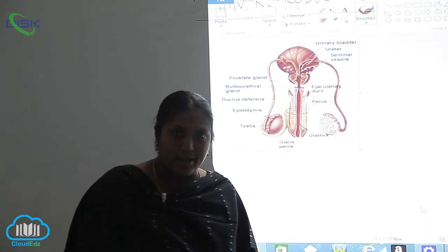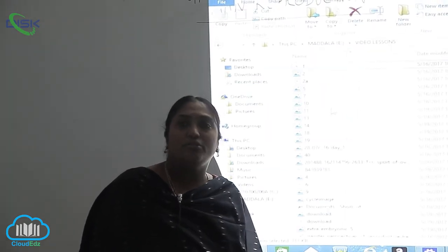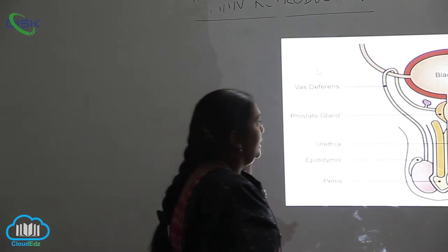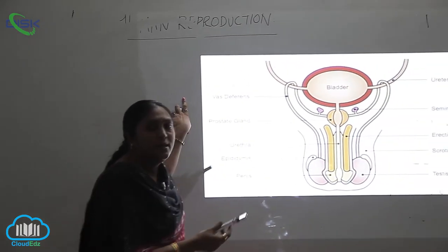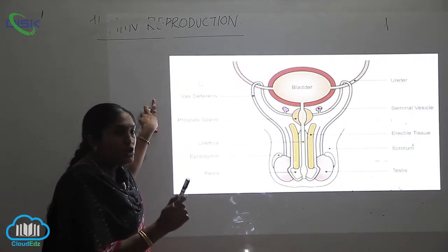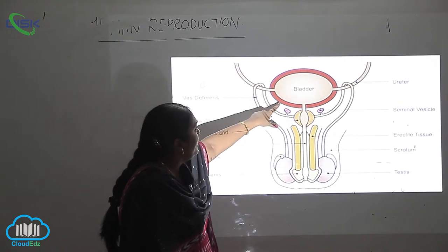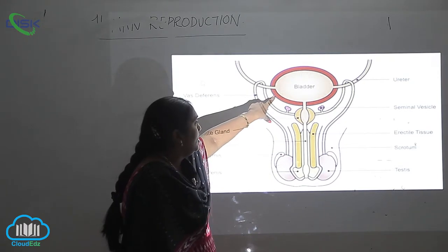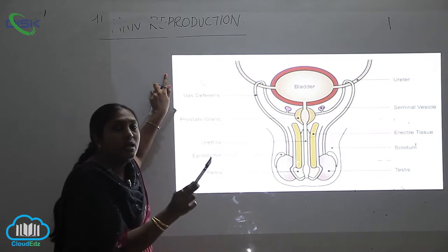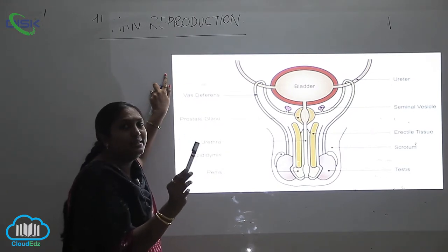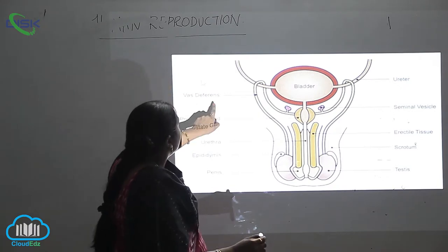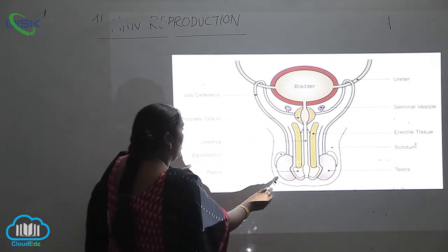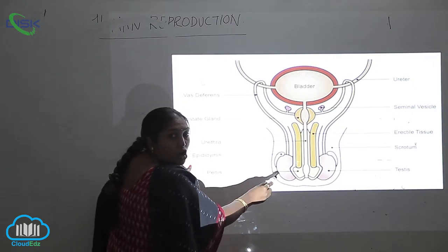Now let us see the next diagram, where we can see the complete structure of the development of the testis. If you see this reproductive system or the testis through an electron microscope, you can see that in the anterior region, the bladder is present. The bladder is the part where complete urine is formed and stored. The vas deferens are the tubes directly connected to the epididymis or the scrotum.